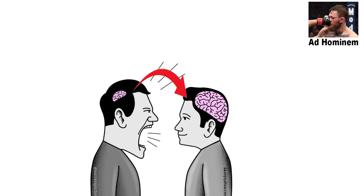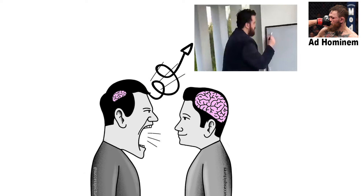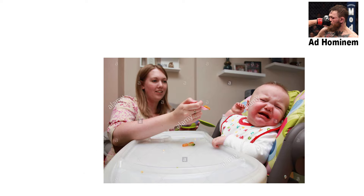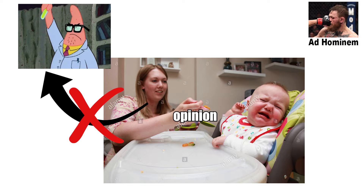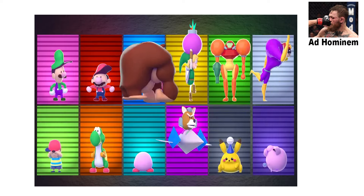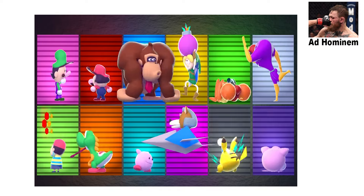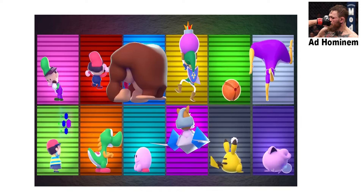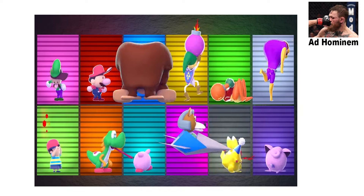Ad hominem fallacy. An ad hominem fallacy occurs when someone attacks the person making the argument rather than addressing the argument itself. Imagine dismissing someone's opinion simply because they're not a scientist. The truth is, their personal background doesn't necessarily make their argument wrong. What matters is the content of what they're saying.